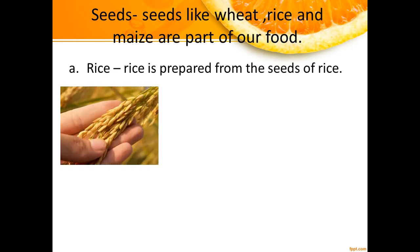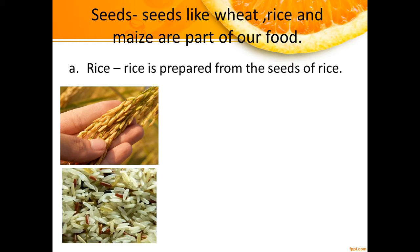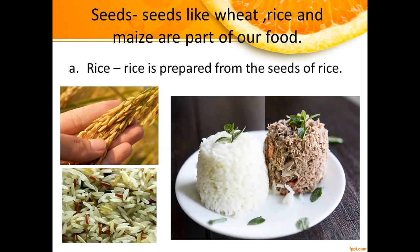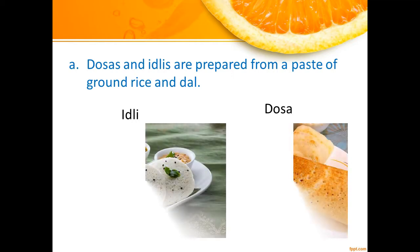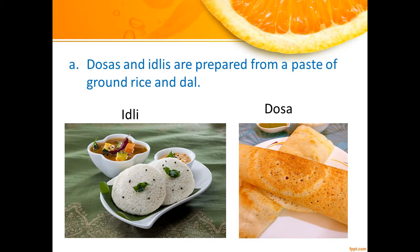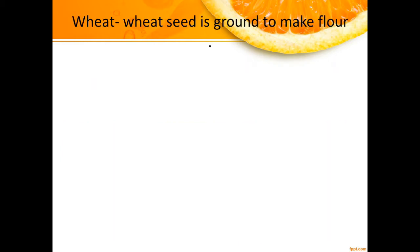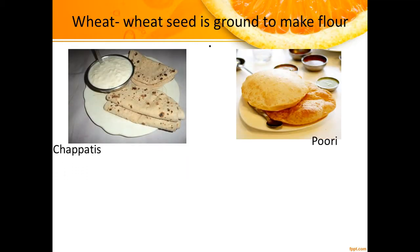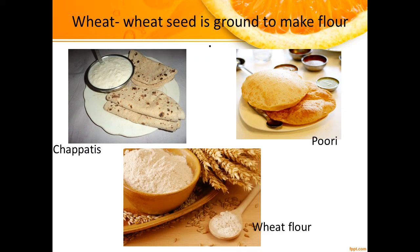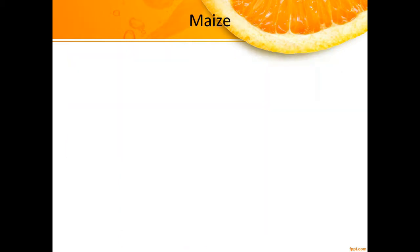First is rice. Rice is prepared from the seeds of the rice plant. We can also prepare dosa and idli from the paste of ground rice and dal. Most of us like to eat chapatis, puri, paratha, and bread. Do you know these are made from wheat flour? Wheat flour is obtained by grinding the seeds or grains of wheat.